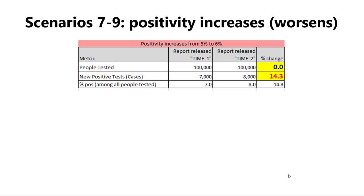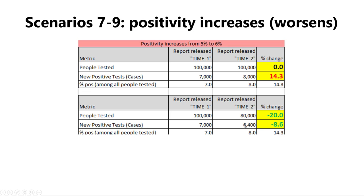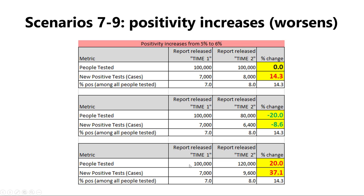The last three scenarios involve increases or worsening in case positivity. When testing volume stays the same at 100,000, we'll see no change in testing but a 14% increase in cases — not due to increases in testing volume. If you're doing less testing, you might actually see a decrease in cases even though positivity is worsening, but the decrease in cases will be less than the decrease in testing. And most commonly, when we see increases in testing volume alongside rising positivity, the proportionate increase in cases exceeds the increase in testing volume — so testing volume alone does not explain all of the increase in cases, only a portion of it.